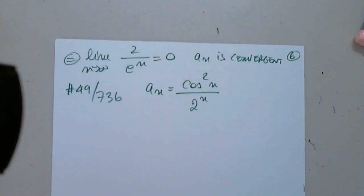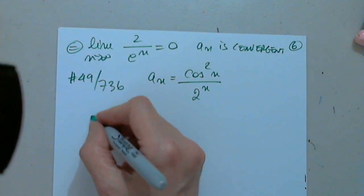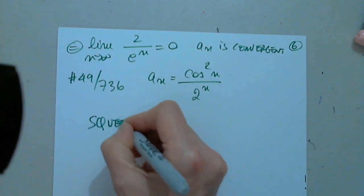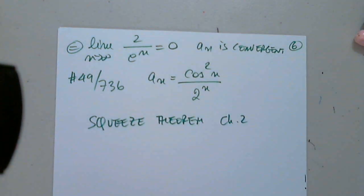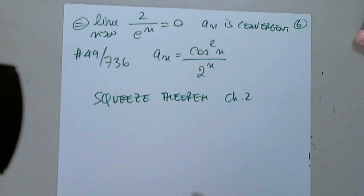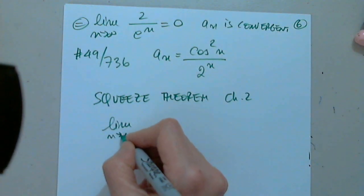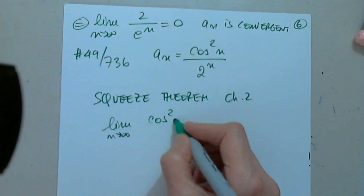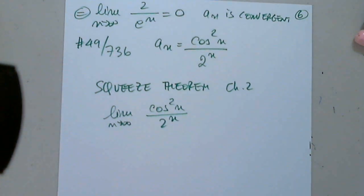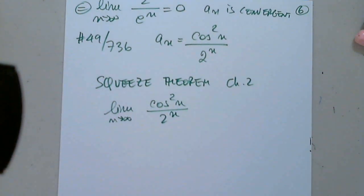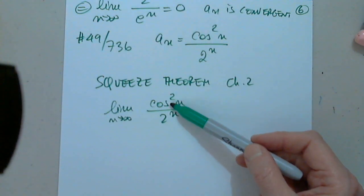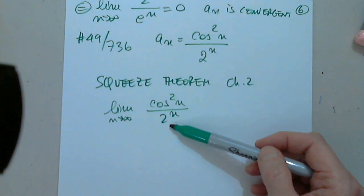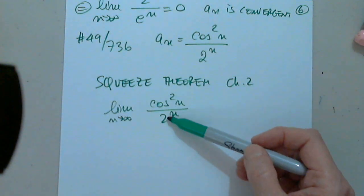Here we're going to look at something else called the squeeze theorem, which is in chapter 2 of calc 1. When we look at the limit as n approaches infinity of cosine squared n over 2 to the n, we have no way of dealing with this directly because cosine squared n is indeterminate and 2 to the n is infinity — so it's d.n.e. over infinity.